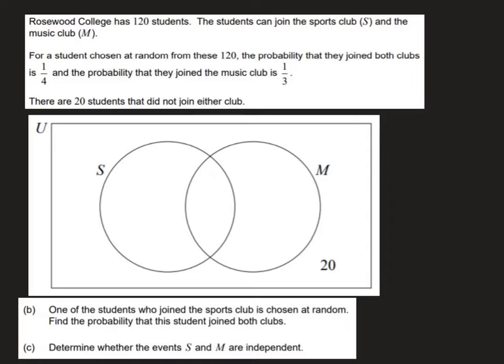Now we are told that there are 120 pupils and the probability that they join both clubs is a quarter and the probability that they join the music club is a third and we're also told that there are 20 students who did not join either club.